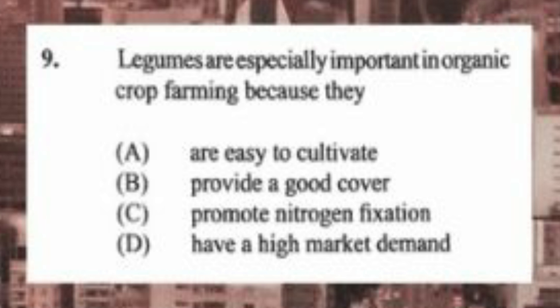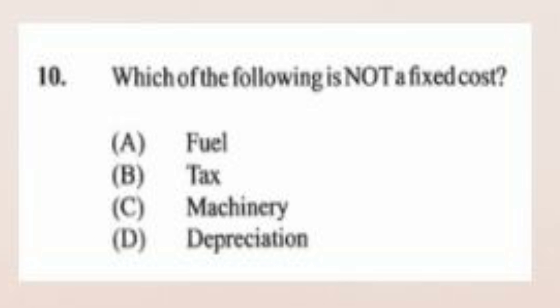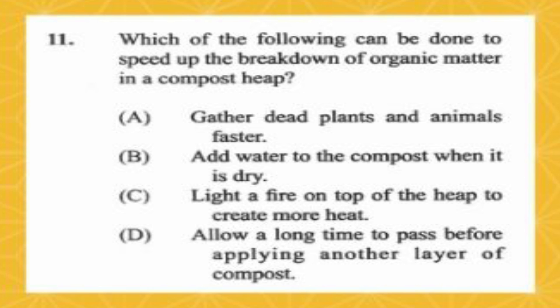Question number nine: legumes are especially important in organic crop farming because they A) are easy to cultivate, B) provide good coverage, C) promote nitrogen fixation, D) have a high market demand. The answer is C, promote nitrogen fixation. Question number ten: which of the following is not a fixed cost? A) fuel, B) tax, C) machinery, D) depreciation. The answer is A, fuel.